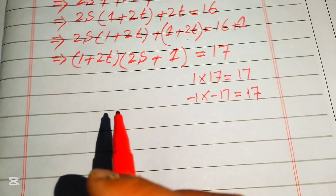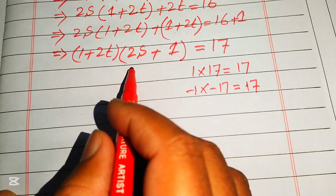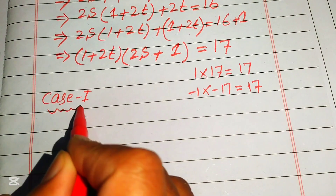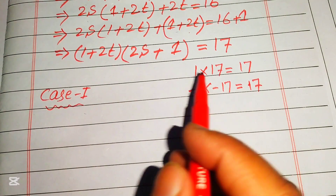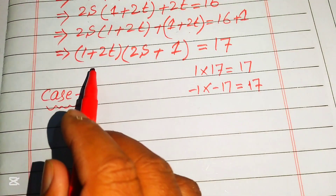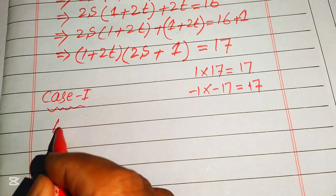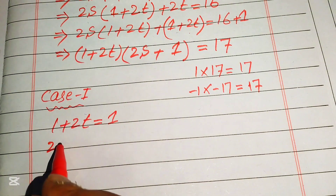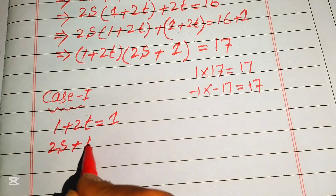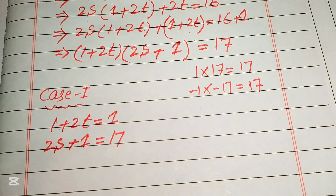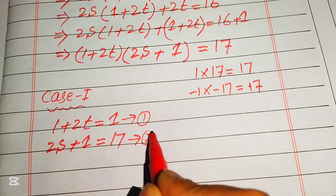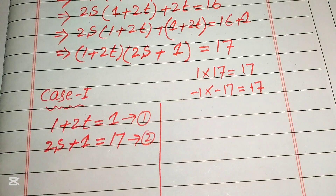We split into two cases by comparing the two factors with these pairs. In Case 1: comparing (1 plus 2t) equals 1 (Equation 1) and (2s plus 1) equals 17 (Equation 2). We'll solve these to find s and t, then compute s plus t.